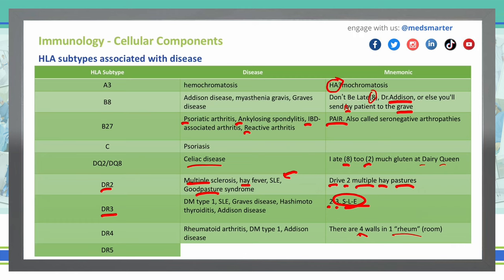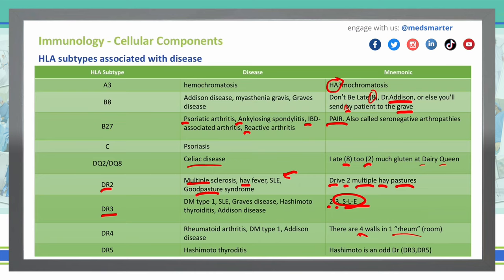Finally, HLA-DR5 is associated with Hashimoto's thyroiditis. Remember this by thinking 'Hashimoto's is an odd doctor' — odd numbers being HLA-DR3 and HLA-DR5 — so DR3 and DR5 both give us Hashimoto's thyroiditis.